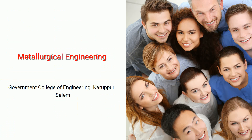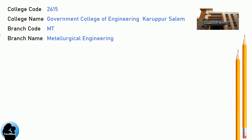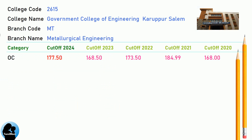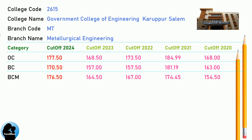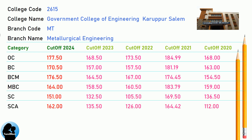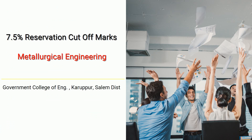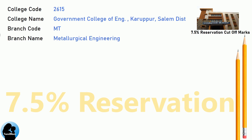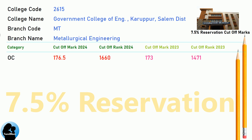DNEA Cut-off for Government College of Engineering, Karupur, Salem in Metallurgical Engineering. DNEA 7.5 Reservation Cut-off for Government College of Engineering, Karupur, Salem District in Metallurgical Engineering.